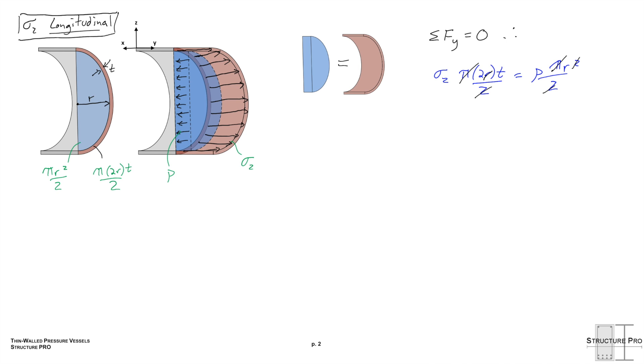In fact, it's half the value. Sigma 2 is pr over 2t, so it's sigma 1 divided by 2. This means, and we'll draw it out here just to clear it up, that the longitudinal stress along the cylindrical thin-walled pressure vessel is half of the hoop stress or the circumferential stress. That also means that joints running longitudinally must be two times stronger than the hoop joints if we consider the normal forces trying to pull those joints apart.